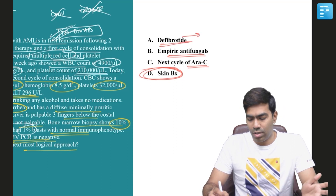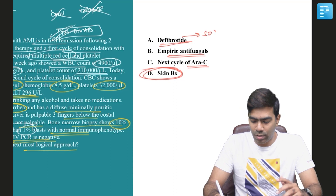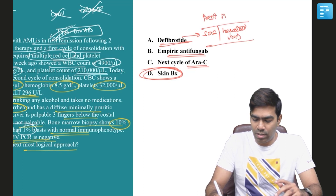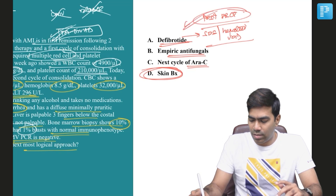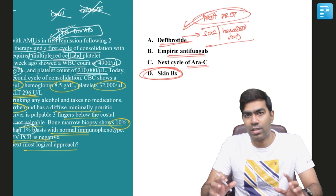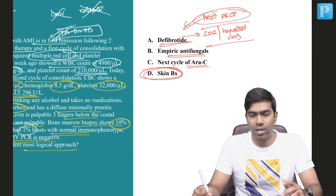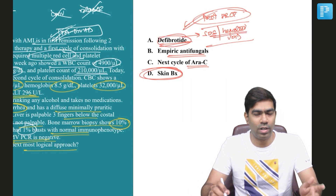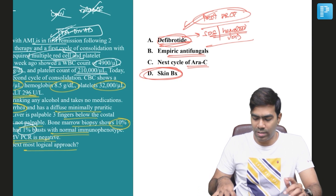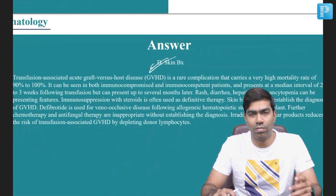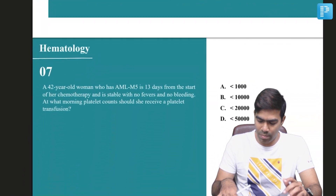Defibrotide is used in sinusoidal obstruction syndrome, otherwise called hepatic veno-occlusive disease, which occurs after hematopoietic stem cell transplantation. Any patient after HSCT presenting with significant liver dysfunction or liver failure may have sinusoidal obstruction syndrome. Many BMT centers currently use defibrotide prophylactically to prevent hepatic veno-occlusive disease. The correct answer for this question is skin biopsy.